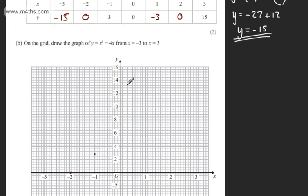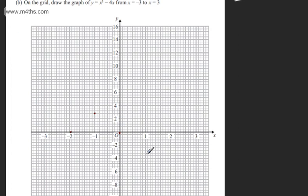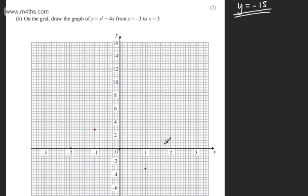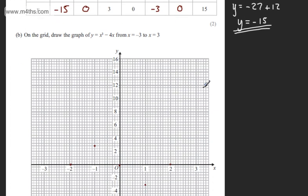We've got the origin which is 0, 0. We've got 1 comma minus 3, so when x is 1, y is minus 3 which is about there. We've got when x is 2, y is 0. And then when we've got x equal to 3 we've got y equal to 15. So let's go ahead and put this.